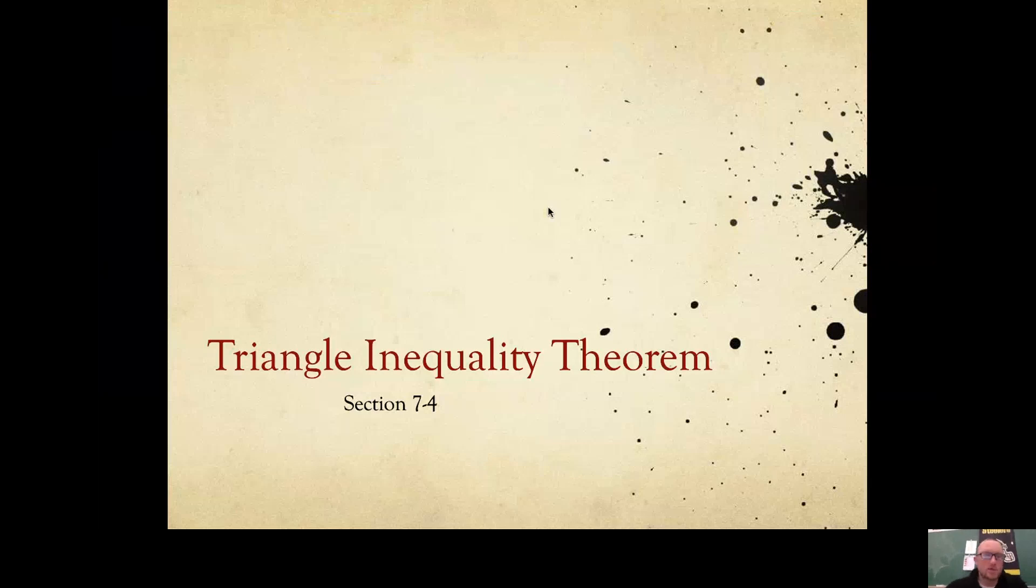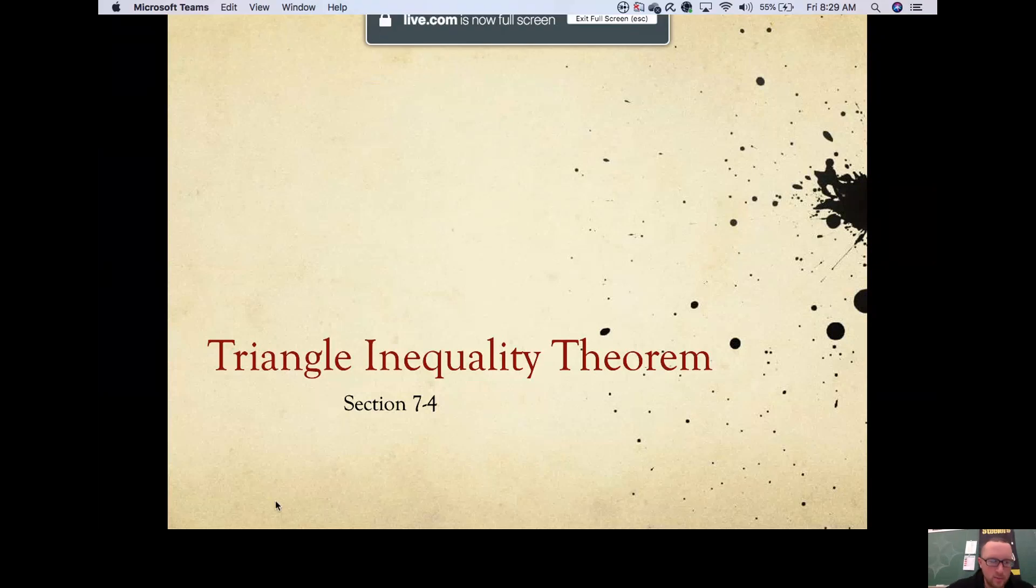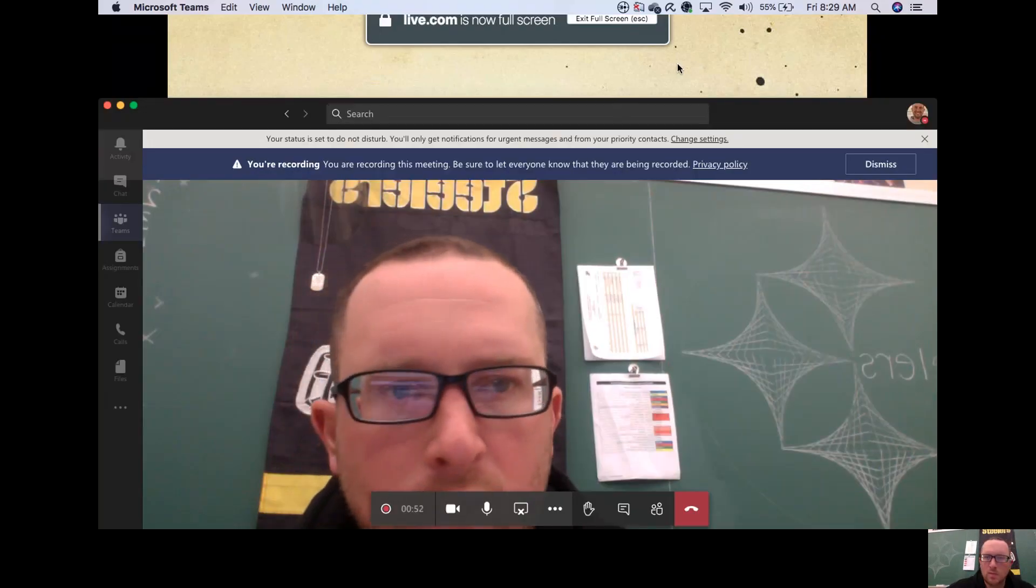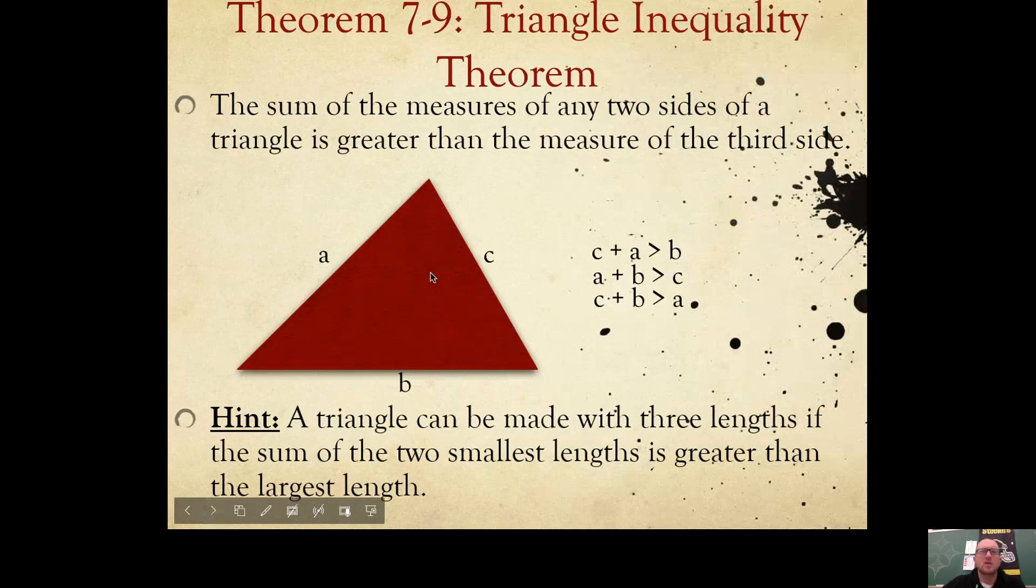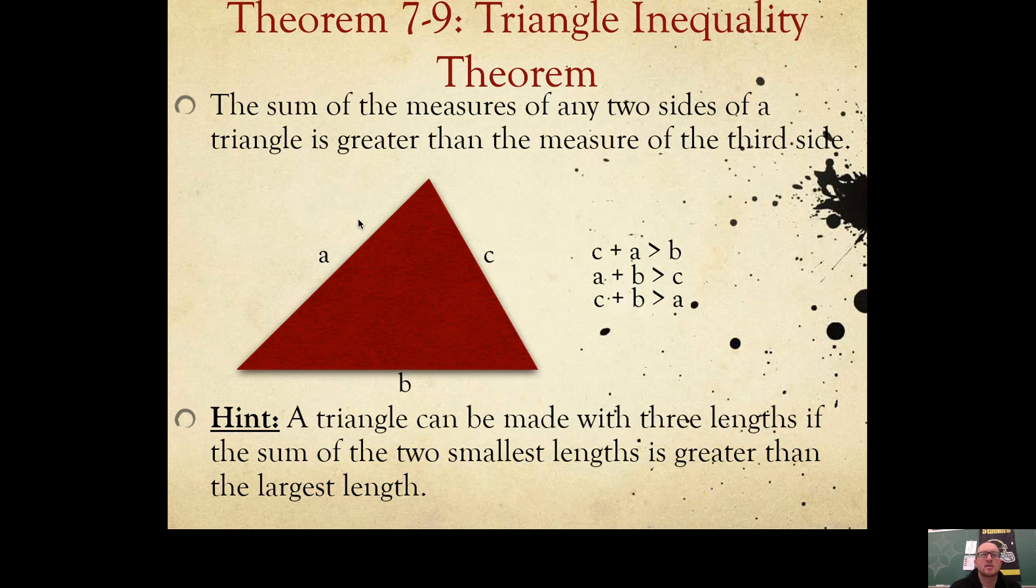This is Section 7-4. It's on the Triangle Inequality Theorem. Theorem 7-9 is the Triangle Inequality Theorem. It says that the sum of the measures of any two sides of a triangle is greater than the measure of the third side.